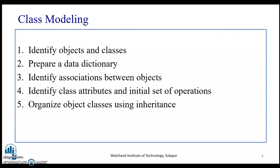In the successive video, we will be considering an example, and at that time you will understand what actually preparing a data dictionary means. To recap: the first step is to prepare a data dictionary in order to identify the objects and the classes. Once you identify the objects and classes, the second step is to identify the associations between the objects — what are associations, how are objects associated, and what are the graphical notations.